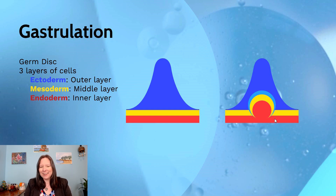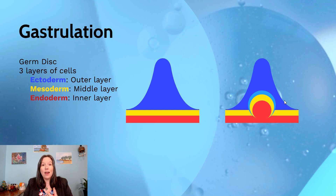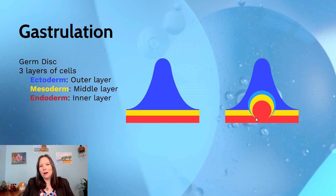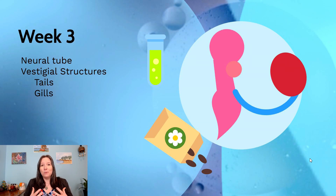The inner layer is the endoderm. Ectoderm and endoderm sound similar, but 'ecto' means outside and 'endo' means inside. The cells on the blue side become the outer parts of our body — things like skin, hair, and the peripheral nervous system. The yellow mesoderm becomes mainly our muscles and bones. The red endoderm becomes our innermost layer, including the cardiovascular system and central nervous system.